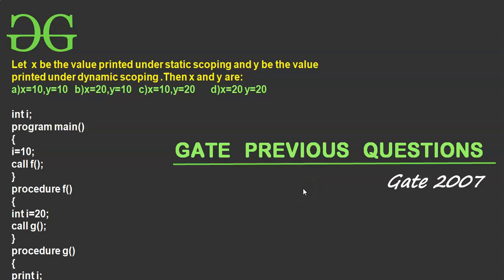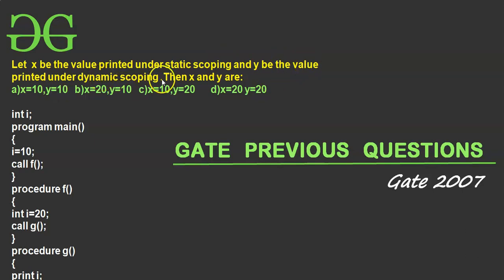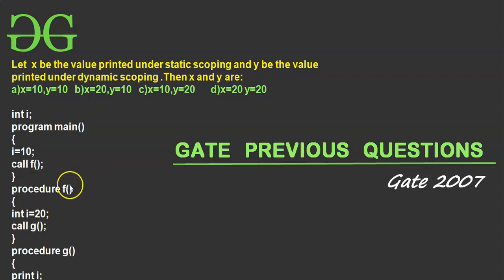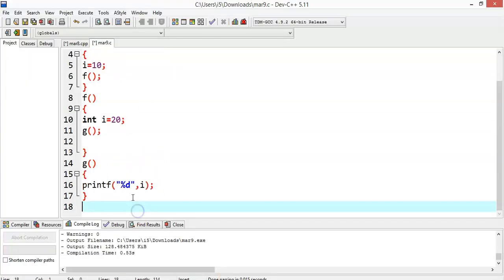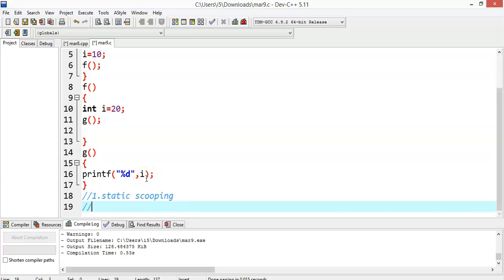In this presentation we'll discuss a GATE previous year question. The concept is related to static scoping and dynamic scoping. The question asks: let x be the value printed under static scoping and y be the value printed under dynamic scoping — what are the values of x and y? This is a pseudo code which we will convert into a normal programming code, and we need to understand two things: static scoping and dynamic scoping.